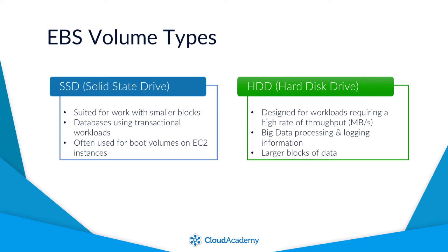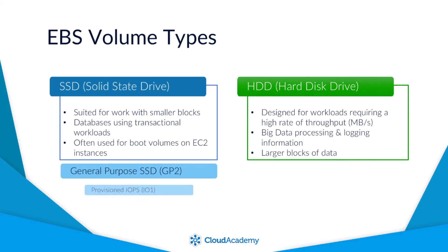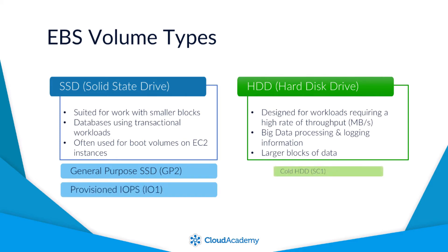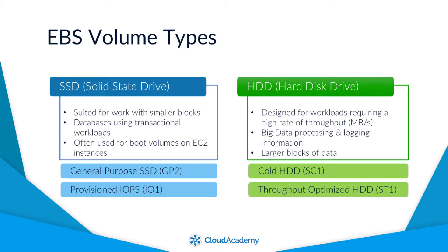Looking at these volume types further, SSD and HDD volumes can be broken down into the following: General Purpose SSD, known as GP2, and Provisioned IOPS, known as IO1. And Cold HDD, known as SC1, and Throughput Optimised HDD, known as ST1.